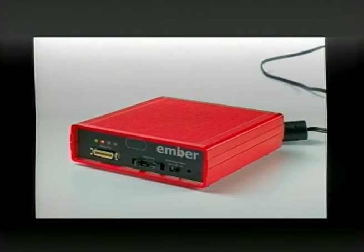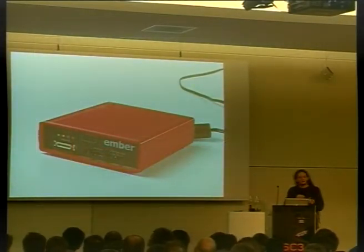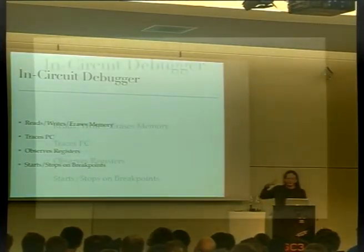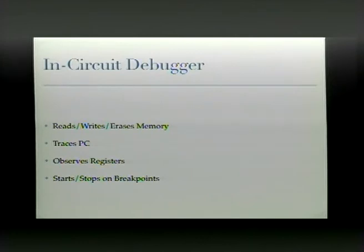So this is the debugger itself. You've got a couple of plugs on the front that you run into the target board. On the back, you've got a USB plug or Ethernet which runs to the host computer. The idea is that it reads, writes, and erases memory. It lets you trace the program counter, so you could do an execution trace of an entire program, single-stepping it and recording where it's been. You can observe registers and start and stop on breakpoints — all the things you'd expect a debugger on a PC to do. The only difference is that the device you're debugging is external to the computer.